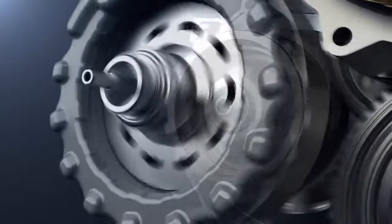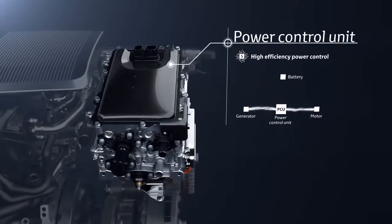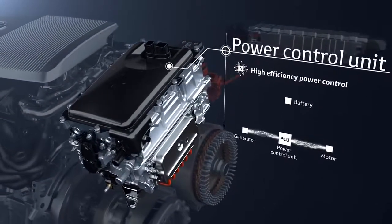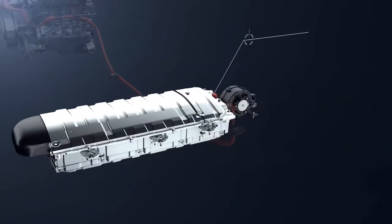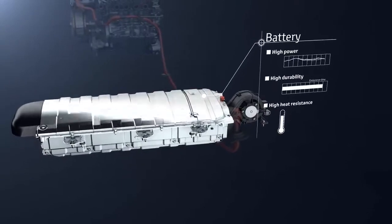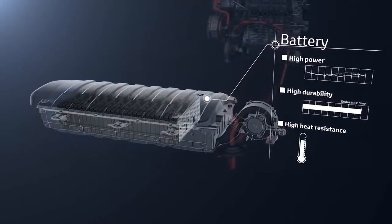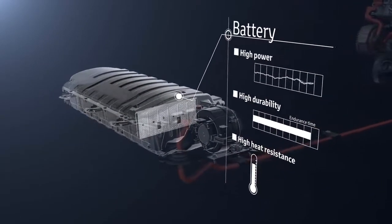The power control unit is the core of the hybrid system, controlling electricity to provide appropriate amounts to each unit. The drive batteries store the generated electricity and supply it to the motor to drive the vehicle. There is no need to recharge from an outside power source or replace the batteries periodically.